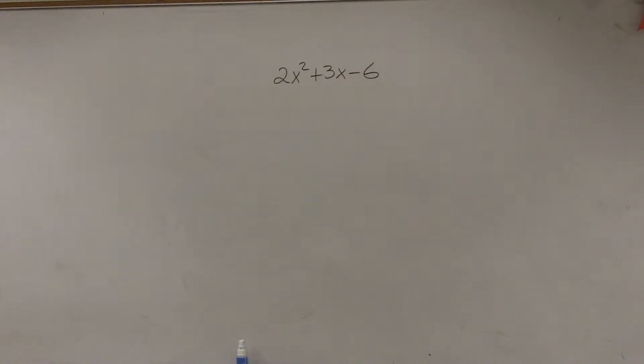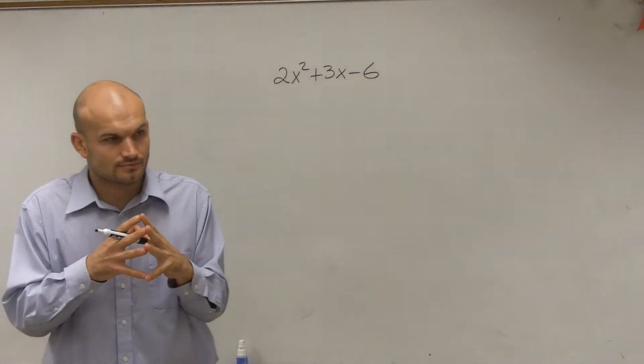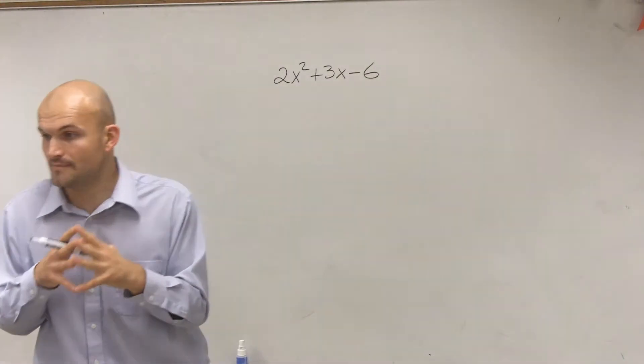All right, so here we go. What I want you guys to do is show you how to factor when we have 2x squared plus 3x minus 6. This is number 6. You're going 2 times 6. This is number 6, right?